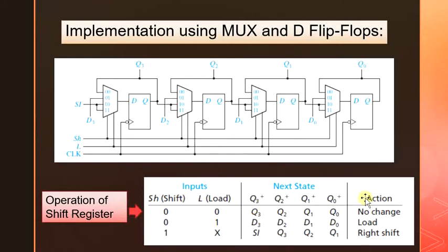The same operation is demonstrated in the form of a table for this particular implementation. If you look at the first flip-flop, you can see that when SH and L is equal to 00, Q3 is being selected at the output by the MUX and Q3 plus will be equal to Q3 and no state change will occur.